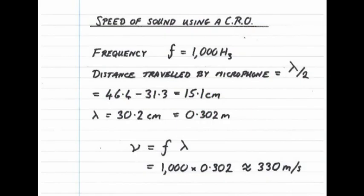In this example, the distance travelled by the microphone is 15.1 cm. Therefore, the wavelength is 30.2 cm. If the frequency is 1000 Hz, using the wave equation V equals F lambda, the speed of sound is found to be approximately 330 m per second.